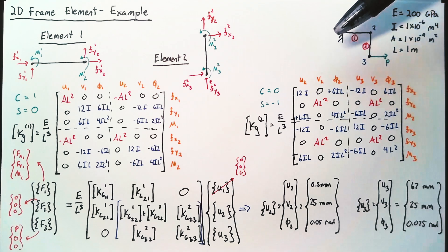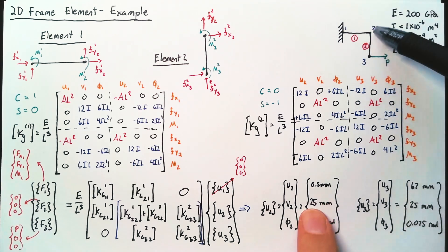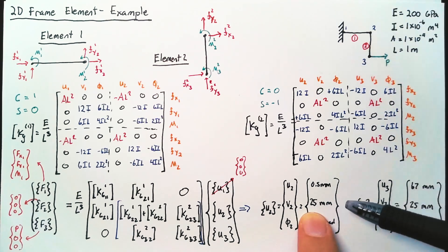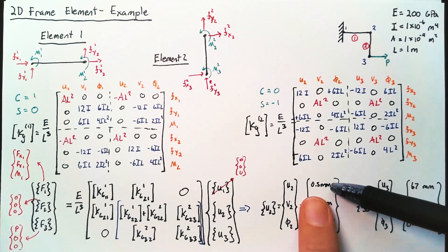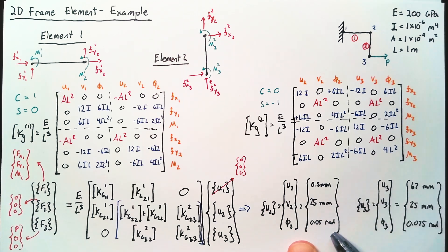And so we're bending this rod upward. And so we see that that bending is actually significantly more important than the extension. And we see just a little bit of rotation at that node 2 location.